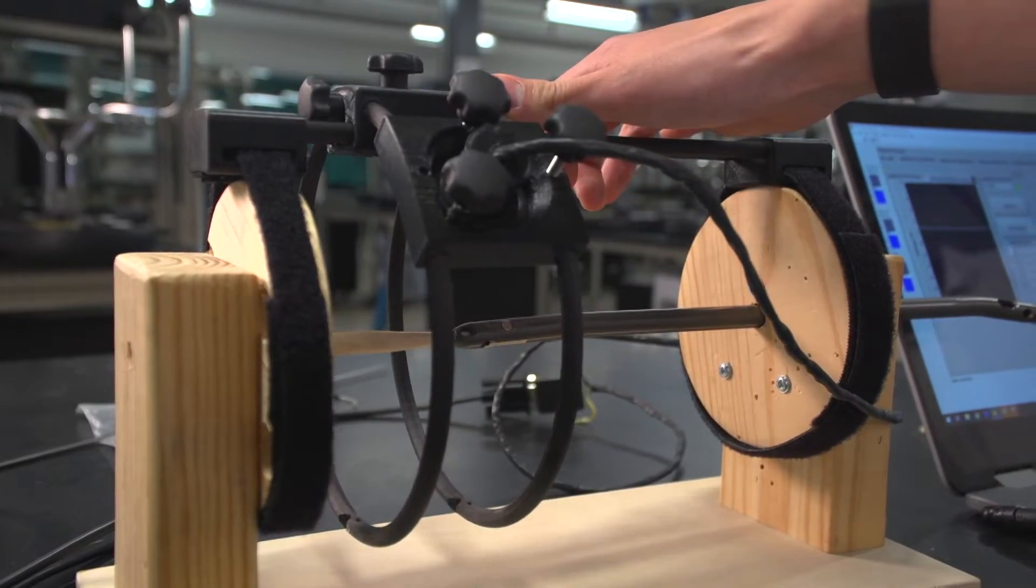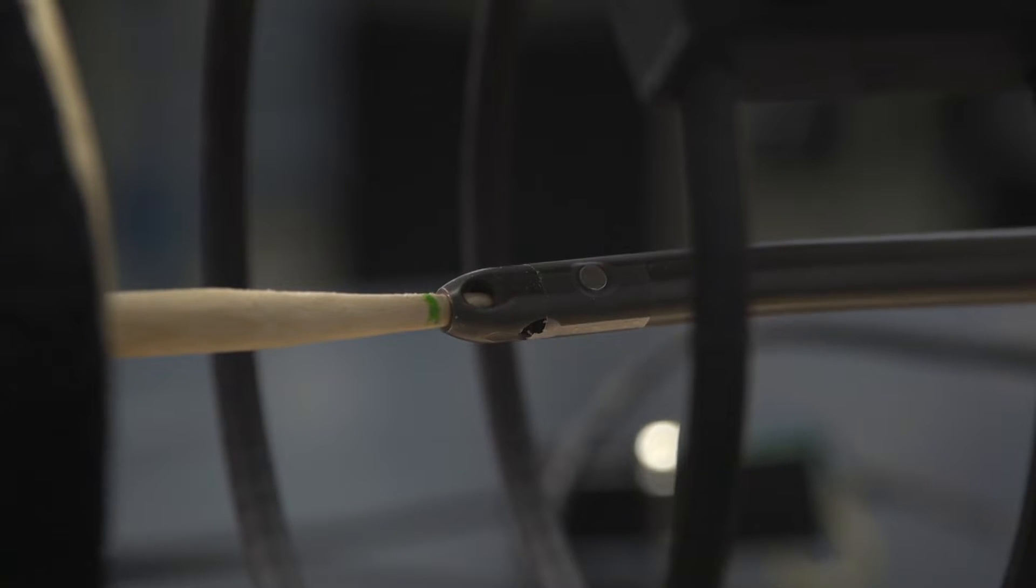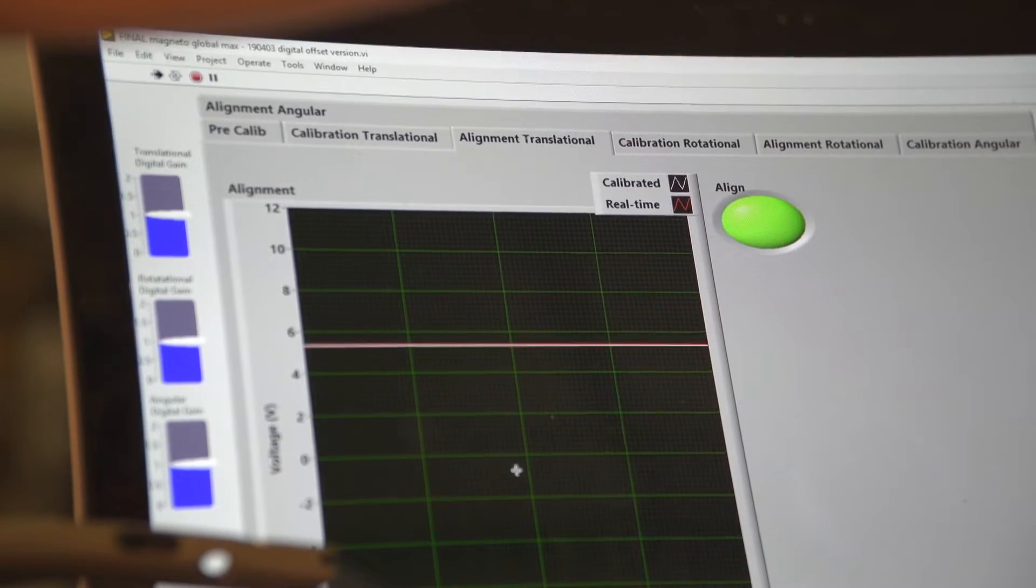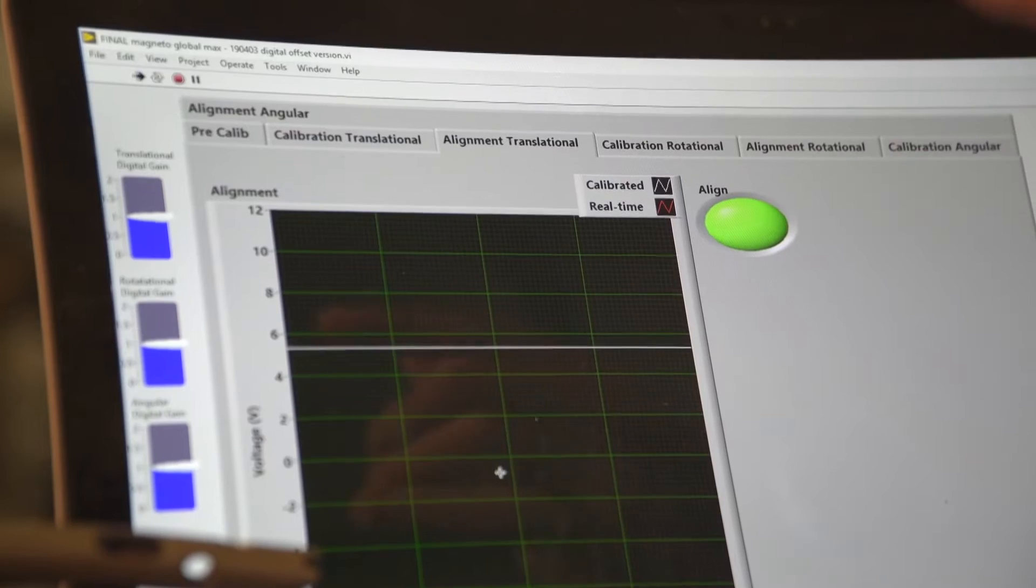The students invented a device that locates the hole in the rod by detecting magnetic fields. Once that light lights up, we know that it's aligned.